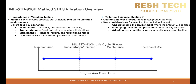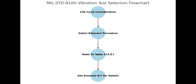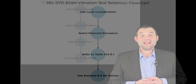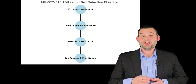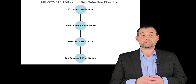In Section 2 of Method 514.8, we will be focusing on tailoring guidance — the instructions on how to select the right vibration test procedures and adapt them to your product's life cycle. When developing your test profile, first consider your life cycle, then select the relevant procedure. Refer to Table 514.8-1 for more information and see Annexes B through F for more details. Section 2.1 highlights how to select this method — essentially, you select the test procedure that best reflects the environment that your product will face.